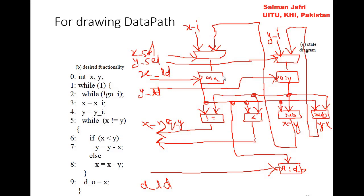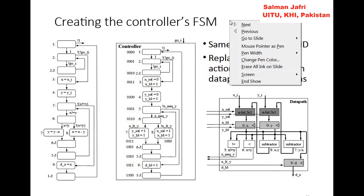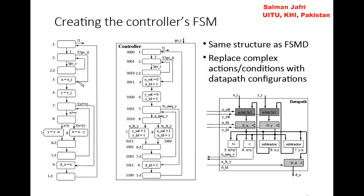After drawing the data path, the next step is to convert the FSMD into the FSM, which is called the controller's FSM. The controller's FSM is straightforward — we use the exact same structure as the FSMD and simply number the states with binary values.